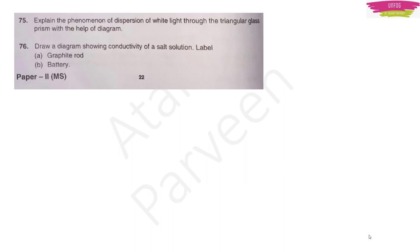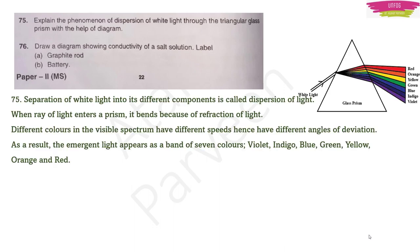Question 75: Explain the dispersion of white light through a triangular glass prism with a diagram. When a ray of white light enters a prism, it bends due to refraction. Different colors have different speeds and thus different angles of deviation. The emergent light appears as a band of seven colors — violet, indigo, blue, green, yellow, orange, and red — which is called the spectrum.